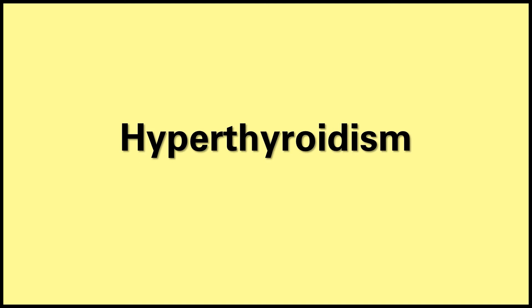The most common etiology in children is Graves' disease, which is a primary hyperthyroidism. Neonatal Graves' disease occurs in about 2% of infants born to women with Graves' disease, due to the passage of the TSH receptor-stimulating antibody across the placenta, but these cases resolve within a few months. Graves' disease is an autoimmune disease where B cells produce antibodies against TSH receptors on follicular cells of the thyroid. These TSH receptor antibodies bind to and activate TSH receptors, causing an increase in thyroid hormone synthesis and thyroid gland growth. Graves' disease presents with regular symptoms of hyperthyroidism plus a diffuse enlarged thyroid and thyroid bruit.